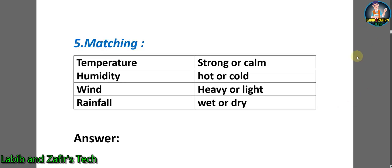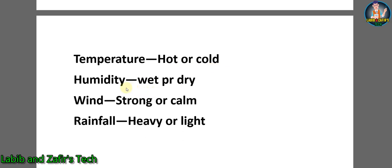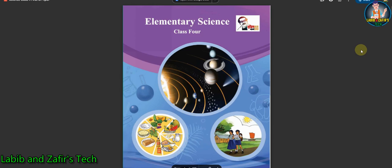Now our descriptive question part is done. Let's go through a matching exercise. Left column: temperature, humidity, wind, rainfall. Right column: strong or calm, hot or cold, heavy or light, wet or dry. Answers: temperature — hot or cold; humidity — wet or dry; wind — strong or calm; rainfall — heavy or light. That's all for today. Hope you liked the video — please like, comment, share, and subscribe to our channel for new videos. Assalamualaikum.